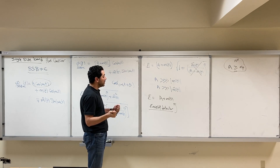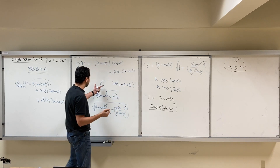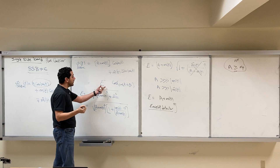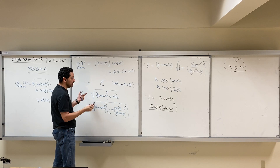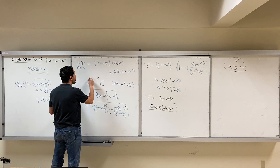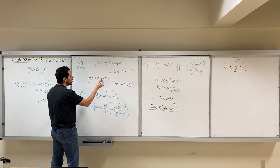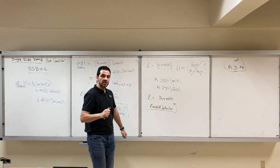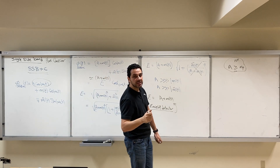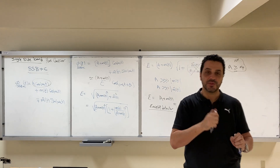So we can say that approximately the envelope will be A + M(t). If we use an envelope detector, we'll be able to detect M(t). That's all with respect to single sideband plus carrier. See you in the next video.